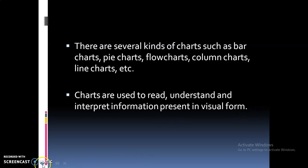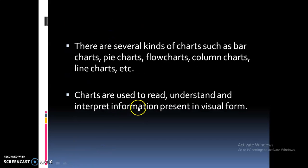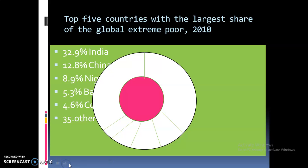We are studying the chapter on reading charts. How to read charts? Charts are used to read, understand and interpret information present in visual form. I am sharing a chart here — a graphic representation of the global extreme poor percentage for the year 2010. It shows the top 5 countries with the largest share of the global extreme poor in the year 2010, represented using a chart.